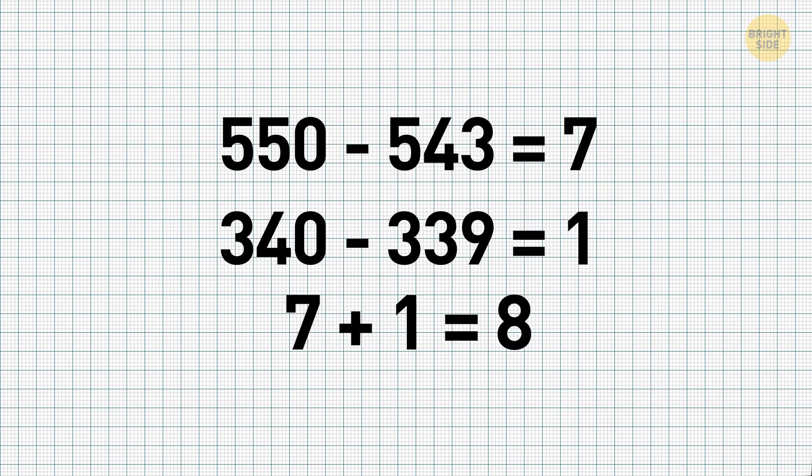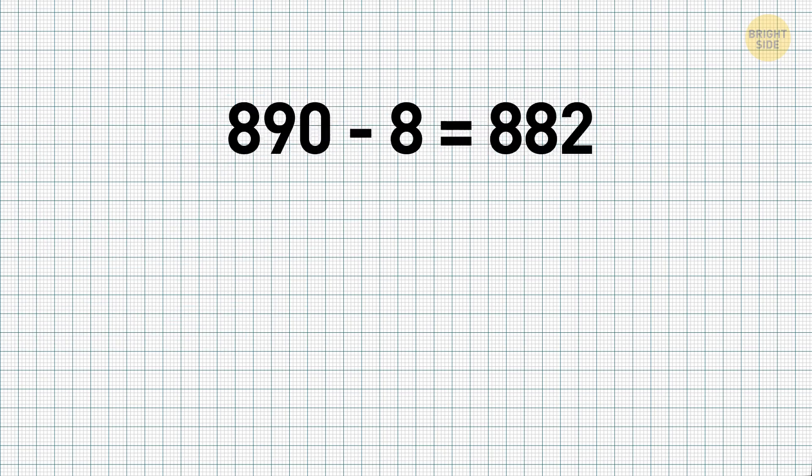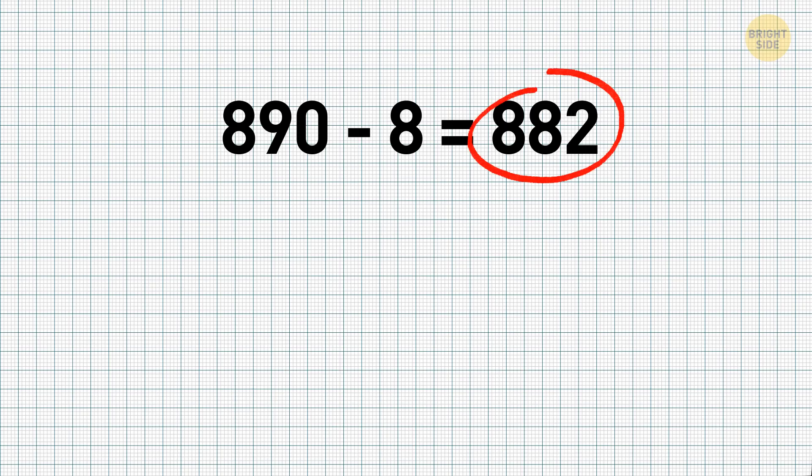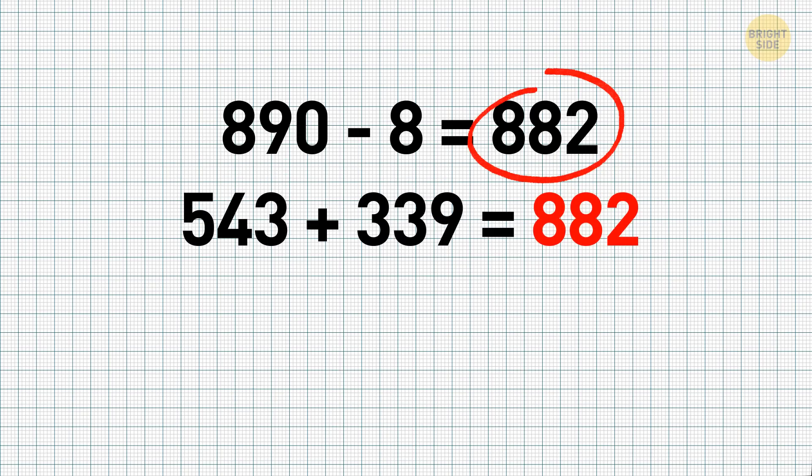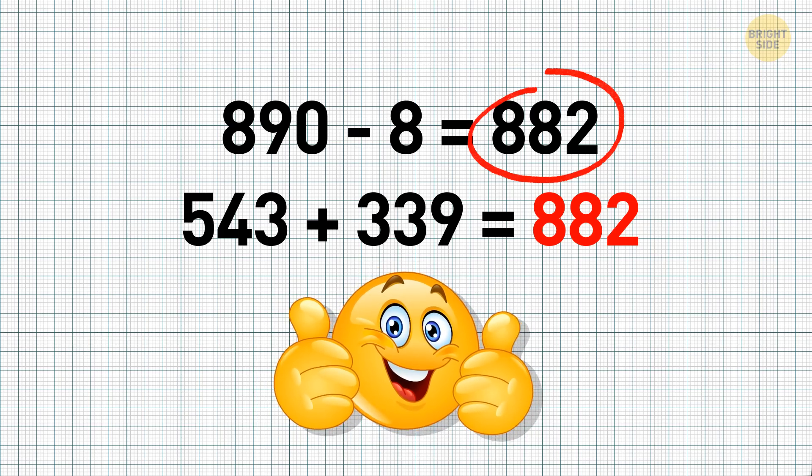Now, add 7 and 1, and you'll get 8. That's how much extra we have in our rounded-up sum. So, the only thing left to do now is subtract 8 from 890, and you'll get your final result. 890 minus 8 is 882. And the answer is 543 plus 339 is 882.